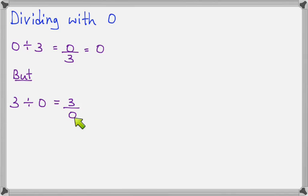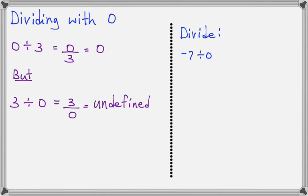So having 0 on the bottom doesn't mean anything, so we just say undefined. Now let's try it again. Negative 7 divided by 0 will give you 0 on the bottom, which is undefined. And 0 divided by negative 2 will give you 0 on the top, which is 0.